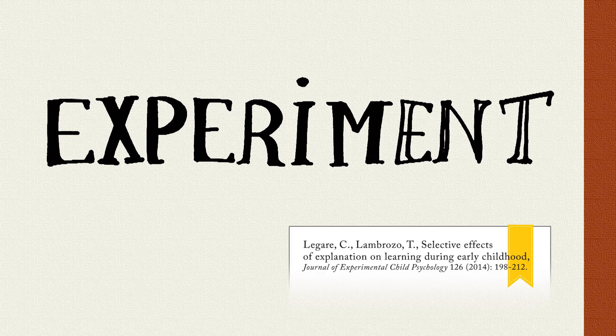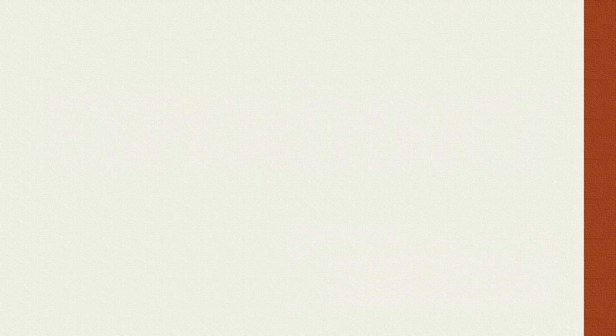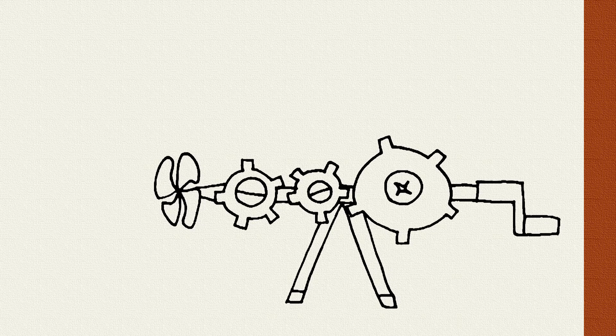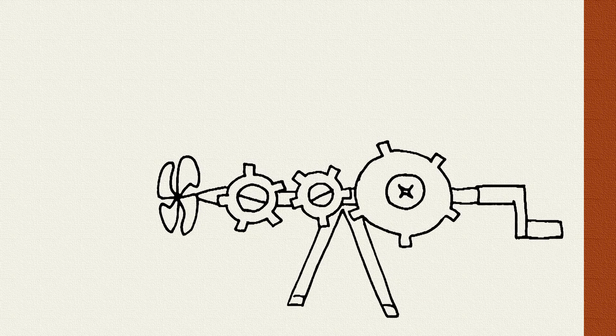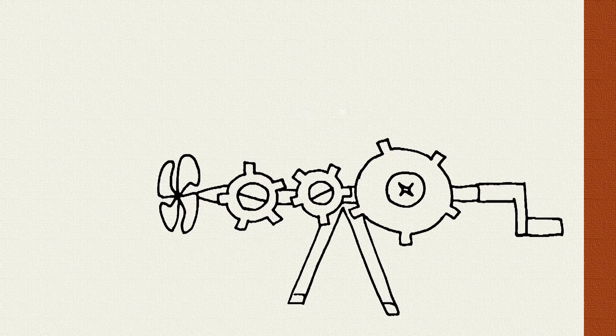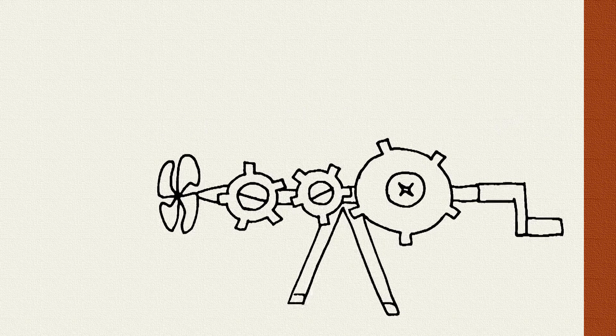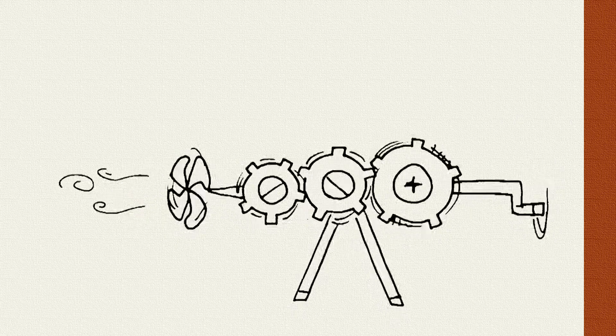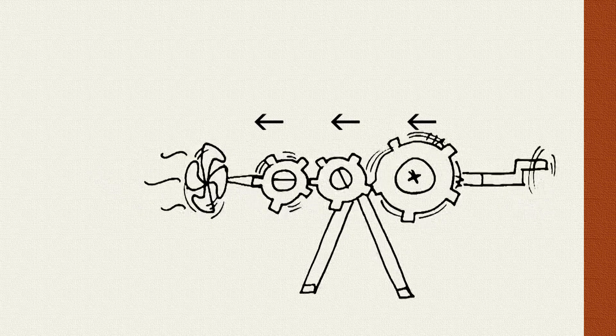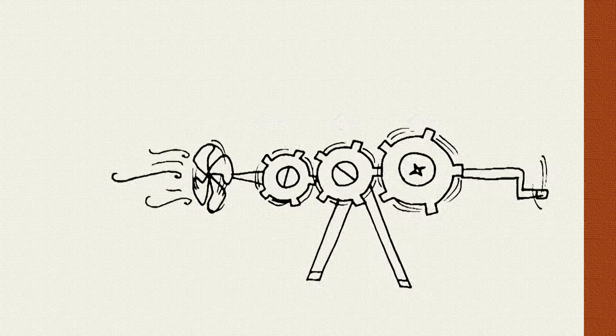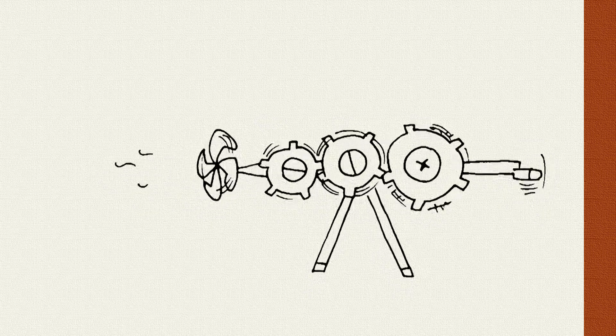So to do this experimentally, what we've done is we've built these novel machines. Now these are simple machines that are meant to be accessible to preschool children. There are a series of interlocking gears with a fan on one end and a crank on the other. And when the gears are interlocked just so, spinning the crank will cause a cascade of gear spinning that will ultimately spin the fan.